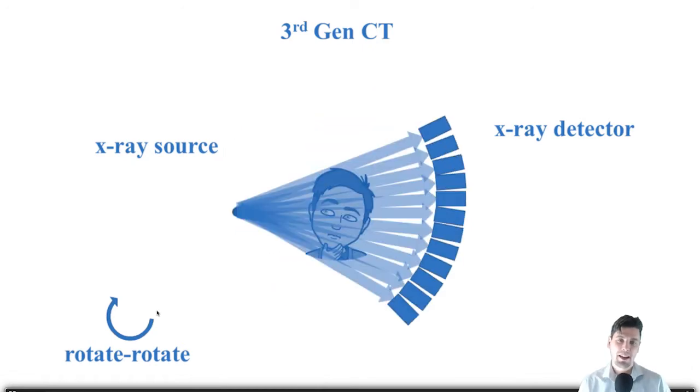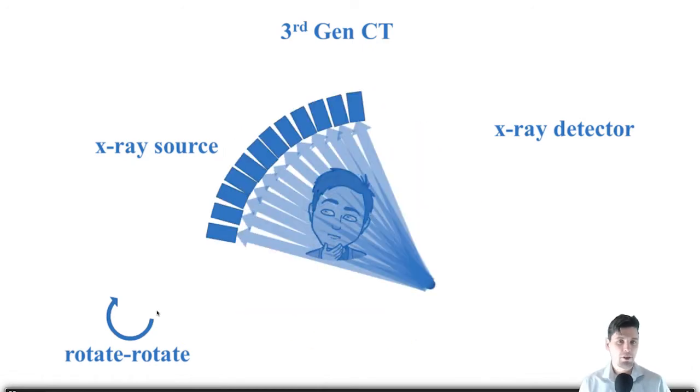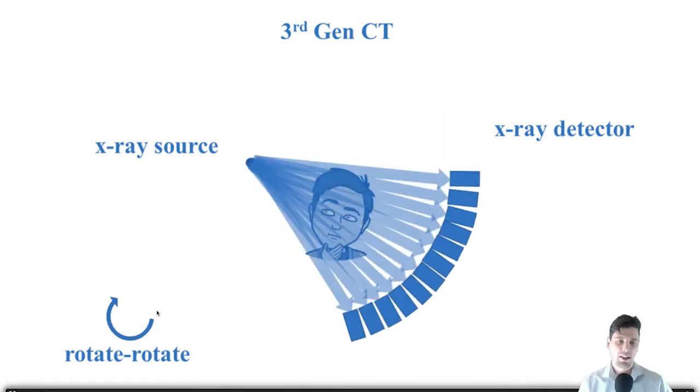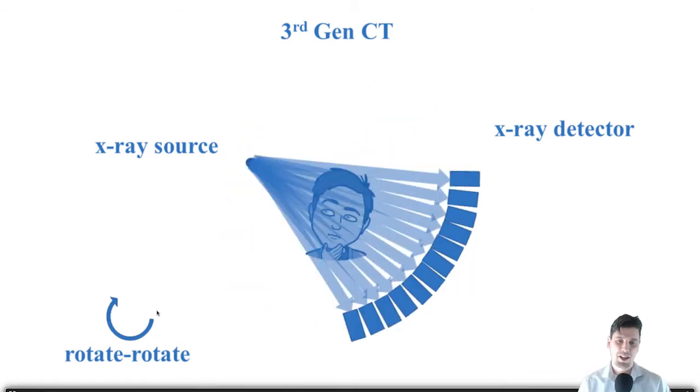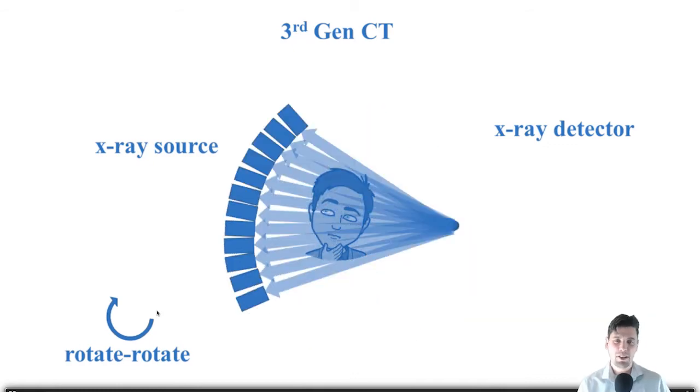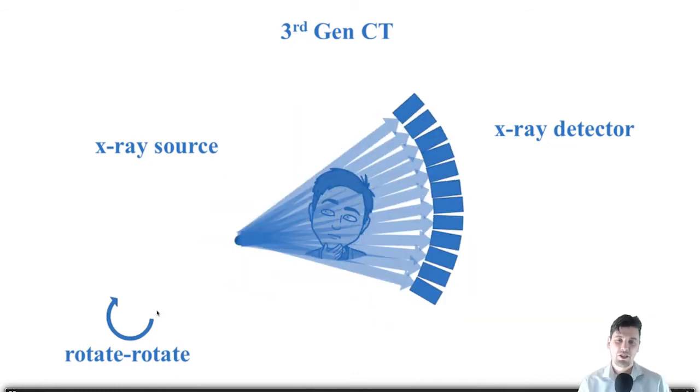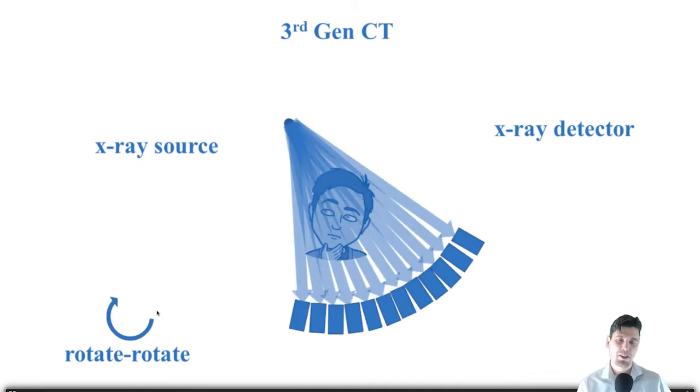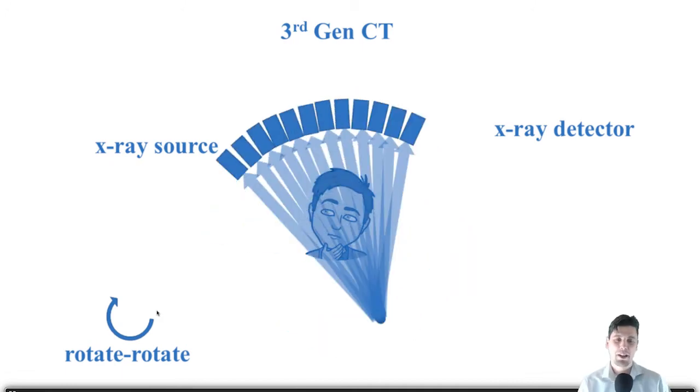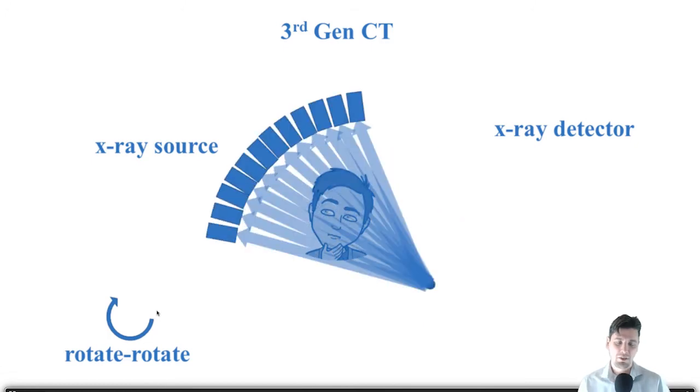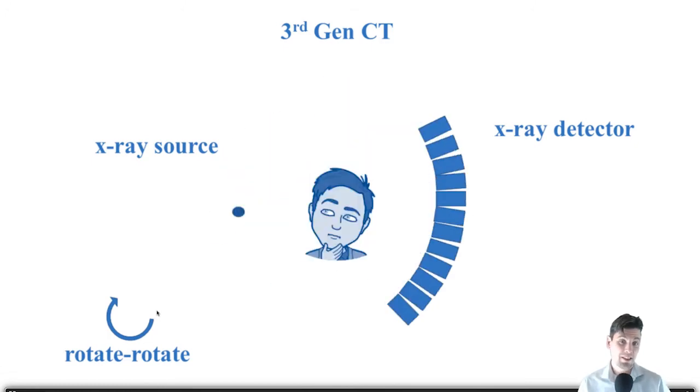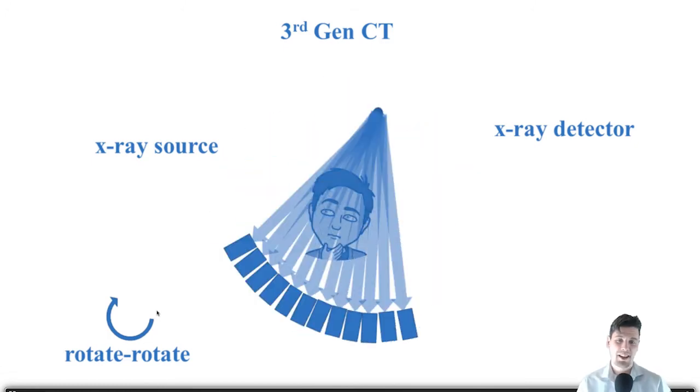We'll talk about that in other lectures, but as far as the high-level, third-generation CT is the one that really survived a one-note race as far as those generations. Some people also have given names to subsequent scanning geometries, like when the table moves, give that another generation name, but in my opinion, this third-generation CT is really the one that is the base of all of modern CT scanning.